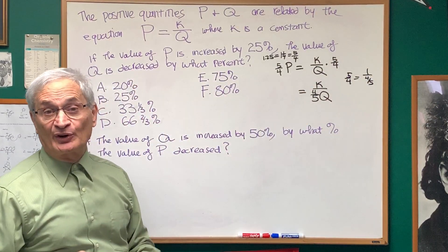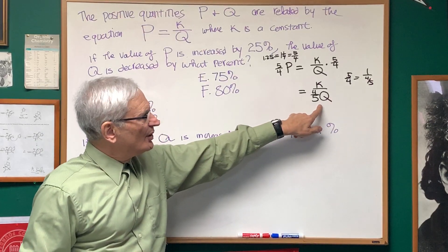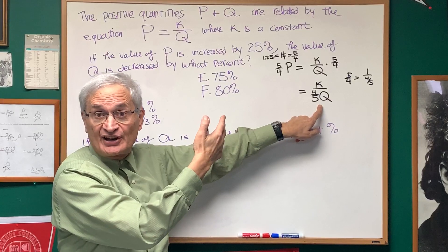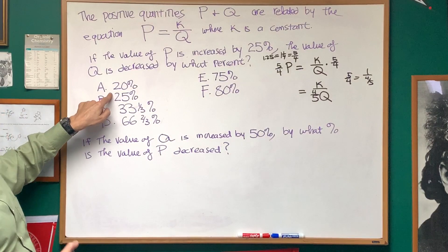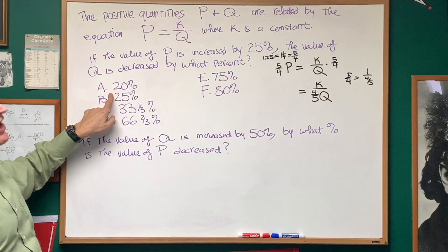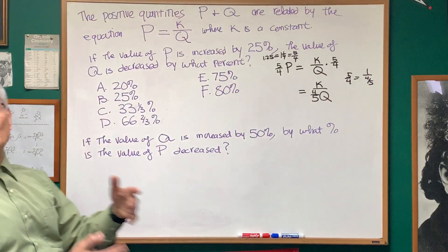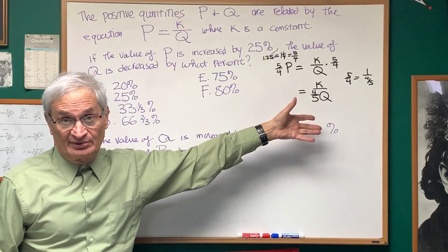And we just bring the 5 fourths down to the denominator. So, what happens with Q? Q is multiplied by 4 fifths, which means it's reduced by 1 fifth, which means it's reduced by 20%. So, when P is increased by 25%, Q is reduced by 20% because of that inverse relationship.